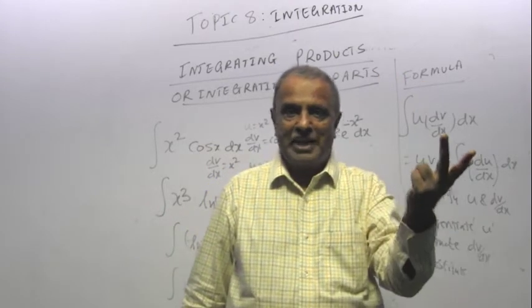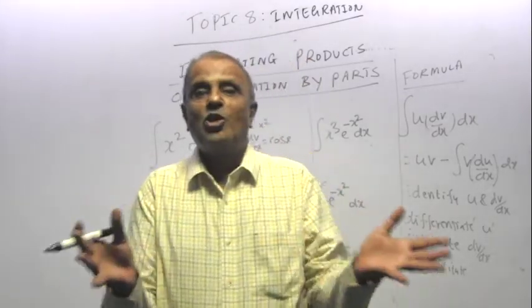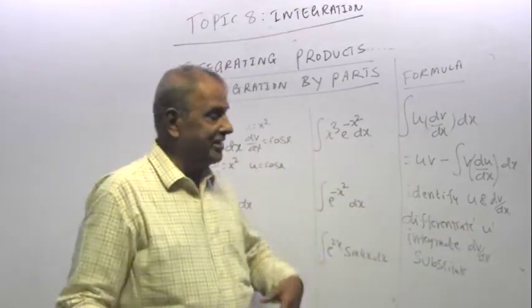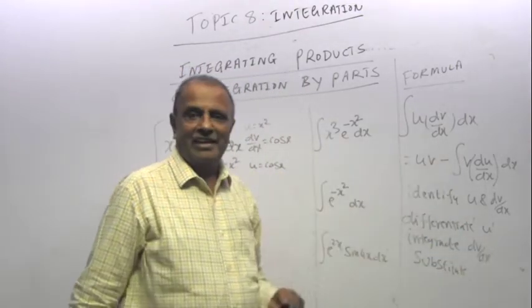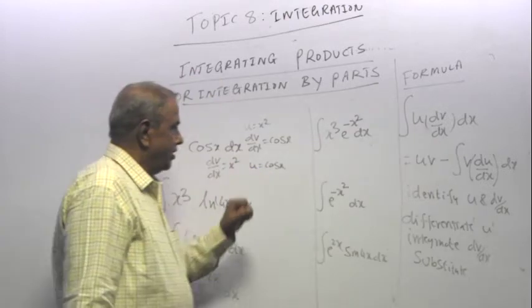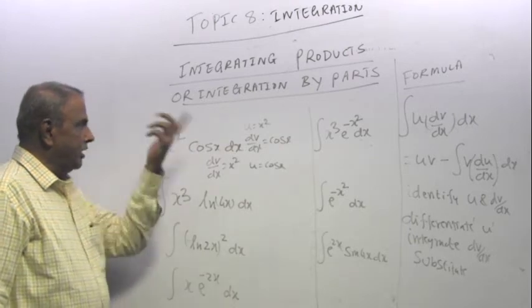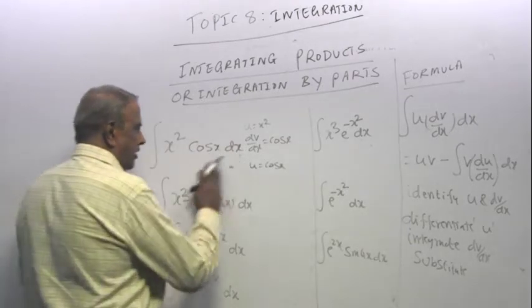When you integrate x squared, you get x cubed. When you integrate x cubed, you get x power 4. When you integrate x power 4, you get x power 5. In other words, your integrals keep on remaining. Remember I told you, repeat the mixture till the patient is cured or the patient dies. But as a math doctor, you do not allow the patient to die.